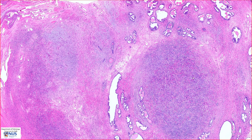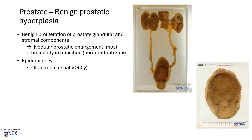Let's learn a bit more about benign prostatic hyperplasia. BPH is a benign proliferation of prostatic glandular and stromal components, which gives rise to nodular enlargement of the prostate gland. Usually this hyperplasia occurs near the central or transition zone of the prostate gland — around the prostatic urethra or the periurethral zone.